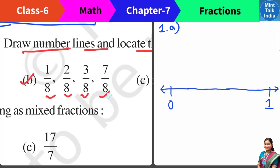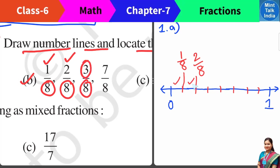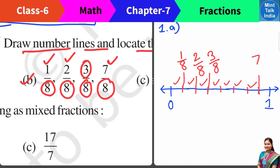Next is part B — denominator is 8, so we divide the number line into total 8 equal parts. First is 1 by 8: out of 8 equal parts, only 1 part — this position is the 1 by 8th place. Then 2 by 8: the second position is 2 by 8. Similarly, 3 parts out of 8 equal parts — 1, 2, 3 parts — that position is 3 by 8. Then 7 equal parts out of total 8 parts — counting 1 through 7 — gives us the position of 7 by 8.